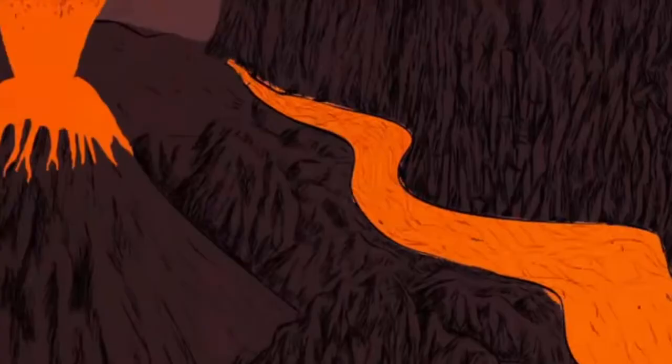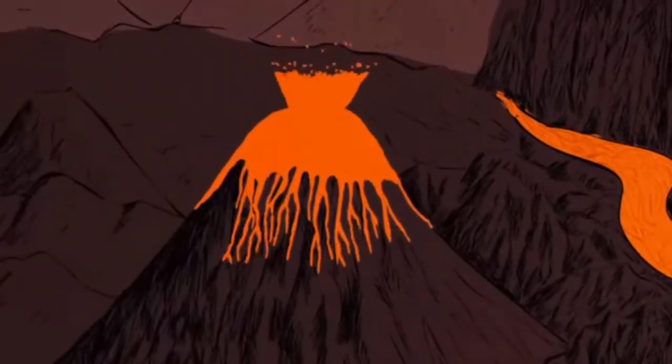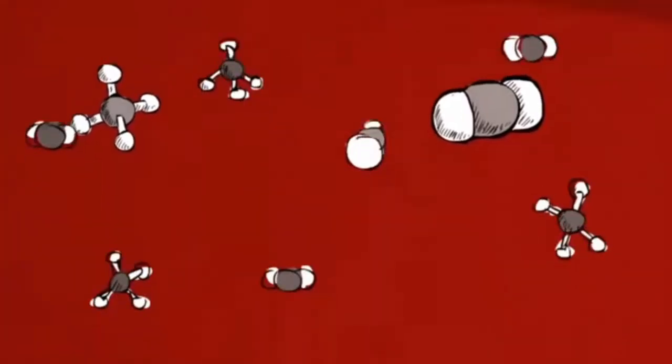Molten rock, or magma, oozed in some places and blasted out in others. Volcanic activity released heavier gases like carbon dioxide and methane. There was still very little oxygen in the atmosphere.